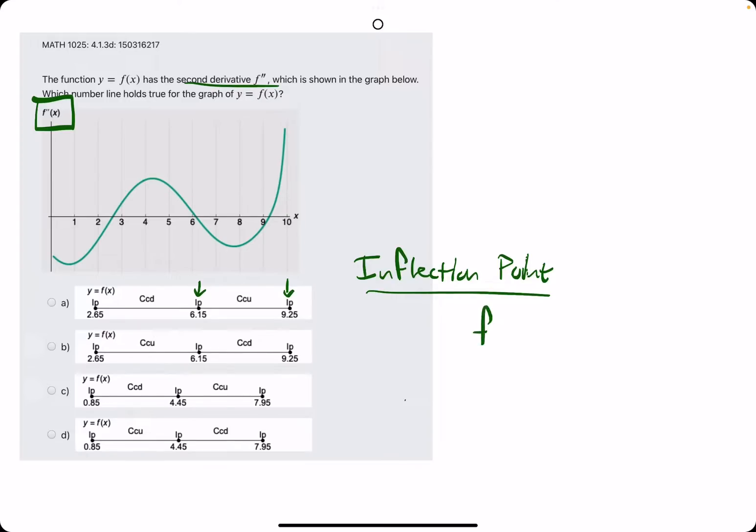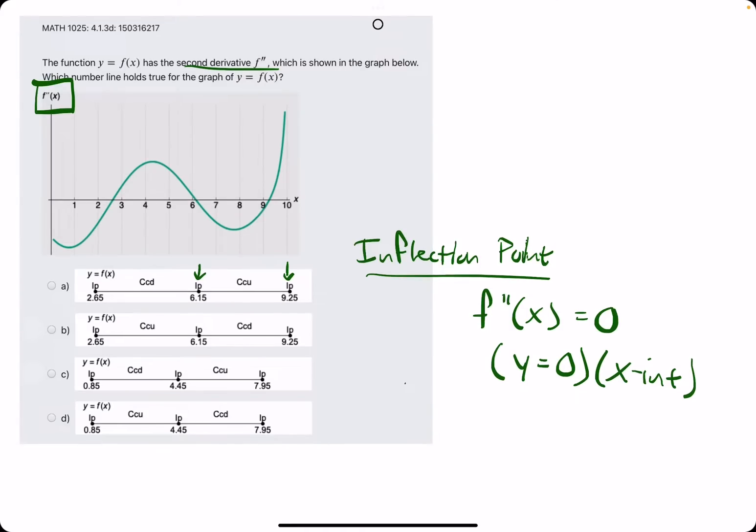In other words, if we're given the graph of f'', it'll be the points where y equals zero. In other words, we're finding x-intercepts just like we were in the other number line problems.